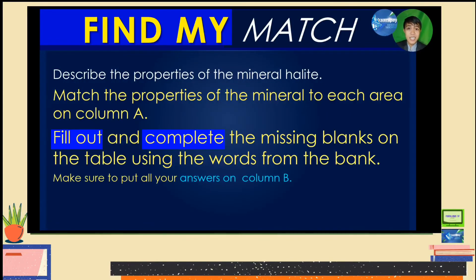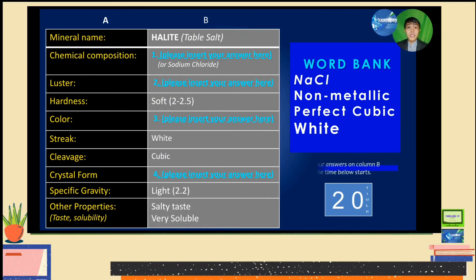The directions are simple: describe the properties of the mineral halite. You will match the properties of the mineral to each area located on Column A. Fill out and complete the missing blanks on the table using the words from the word bank. Make sure to put all your answers on Column B. I will be giving you a list of words from our word bank, and I will be showing you the table here. So we have here Column A and Column B — you will fill out Column B from our word bank.